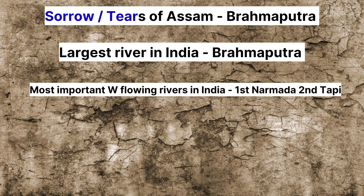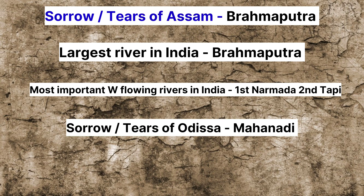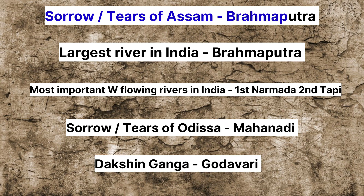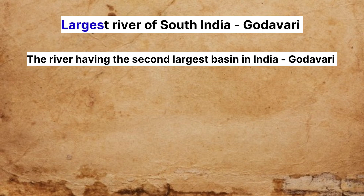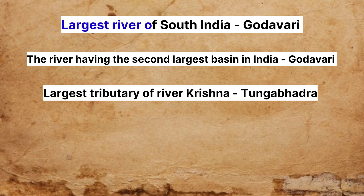The sorrow or tears of Assam is the Brahmaputra. The largest river in India is the Brahmaputra. The most important west-flowing rivers in India are first the Narmada, and second the Tapi River. The sorrow or tears of Odisha is the Mahanadi. Dakshin Ganga is the Godavari. The largest river of South India is the Godavari, which also has the second largest river basin in India. The largest tributary of the River Krishna is the Tungabhadra.